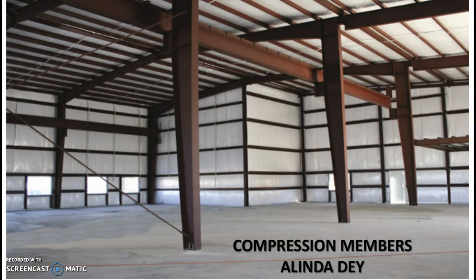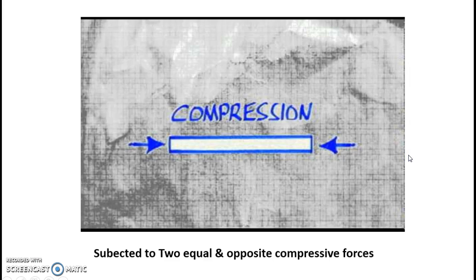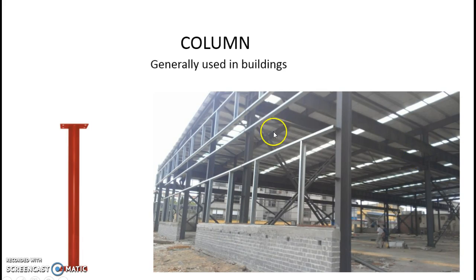Welcome. Today we will discuss the compression member in steel structures. In this picture we can see these members are basically compression members. A compression member is any structural member which is subjected to two equal and opposite compressive forces — that means if it is pushed from both sides, both ends, it is a compression member.